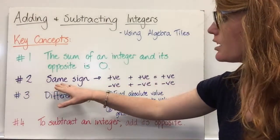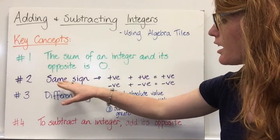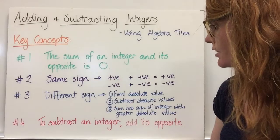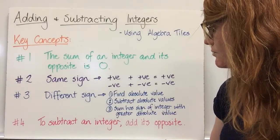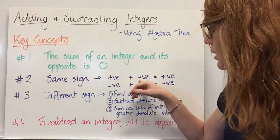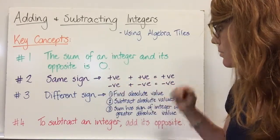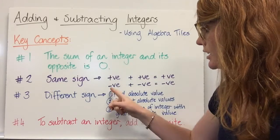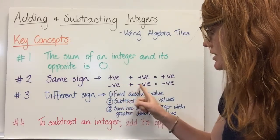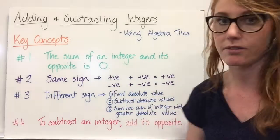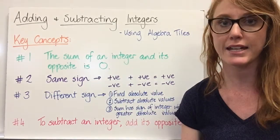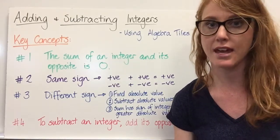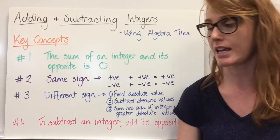Number two: if we are using the same sign for adding, then we have positive plus positive equals positive, and negative plus negative equals negative. So adding the same sign results in that sign for the answer.